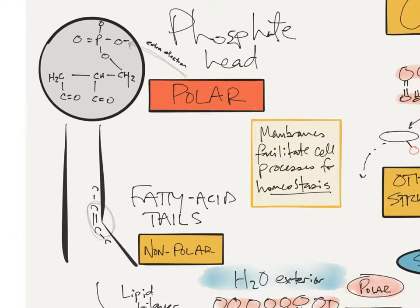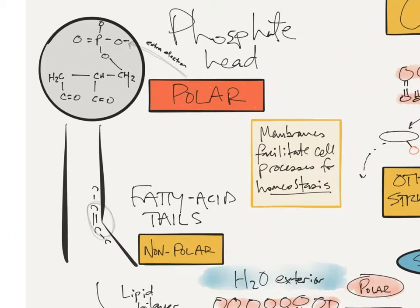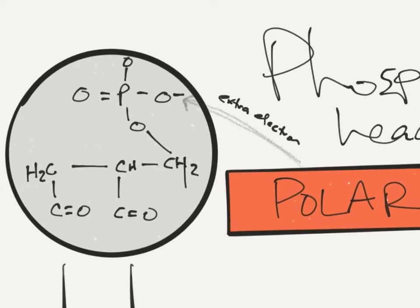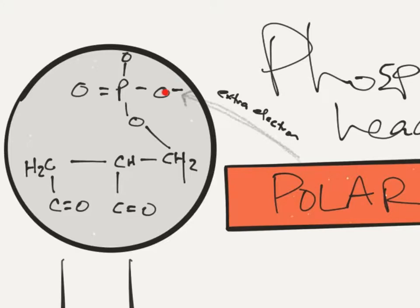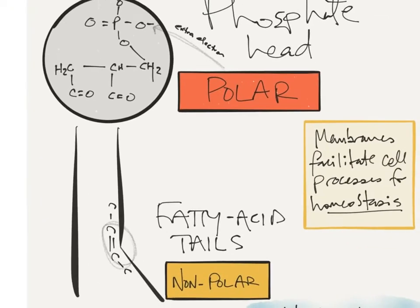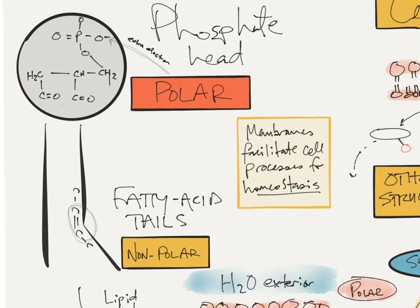We're going to start off here with our monomer, the phosphate, the phospholipid. This is a structure that makes up all cell membranes, and cell membranes regulate a lot of the processes that happen in the cell. Remember the phosphate head is polar because there's an extra electron right here on this oxygen, giving it a slightly negative charge. The polarity of that molecule causes a phospholipid to form a bilayer.